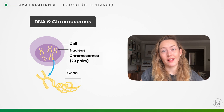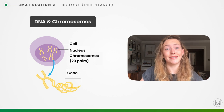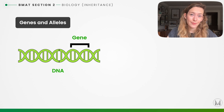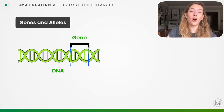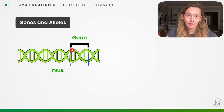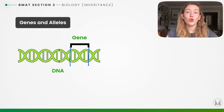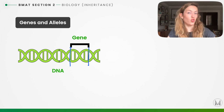We also have haploid cells, which have 23 chromosomes — these are our sex cells, so sperm and egg cells, also called germline cells. A gene is a section of DNA that codes for a certain protein or characteristic, for example blue eyes. An allele is a different version of a gene — we'd find this gene at the same place on every person's chromosome, but for different people it might code for blue eyes, brown eyes, green eyes, etc.